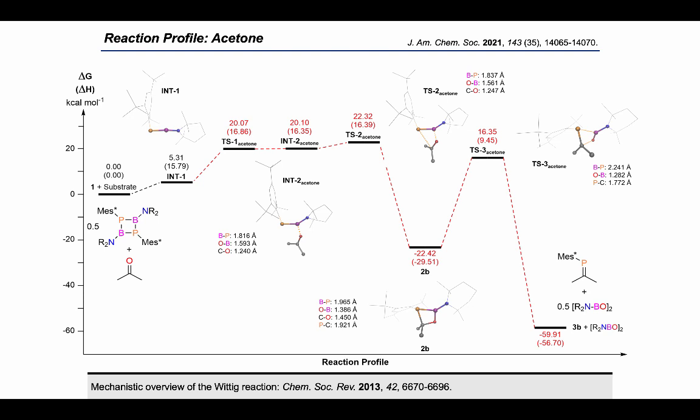The barrier for cycloreversion is close to 39 kilocalories per mole, which is consistent with our experimental observations that this reaction cannot be promoted thermally and instead requires a Lewis acid.